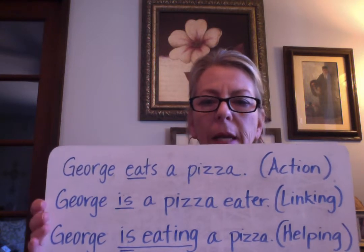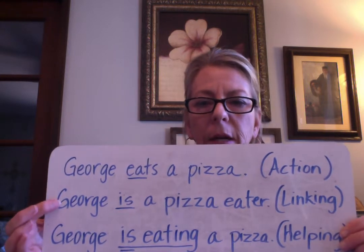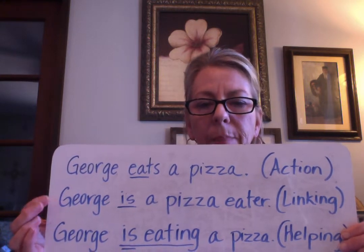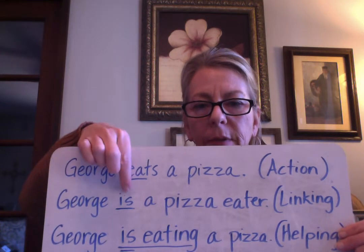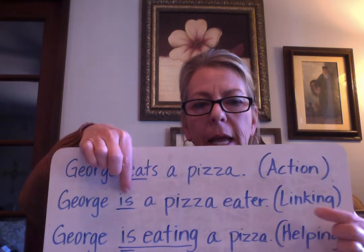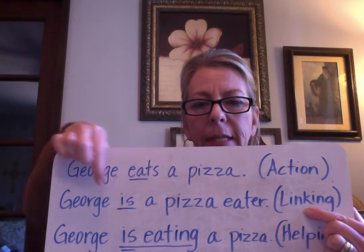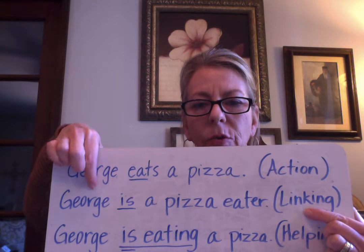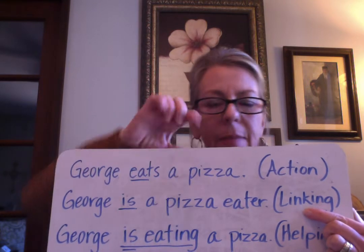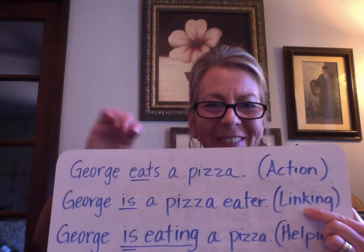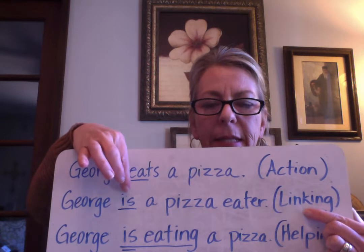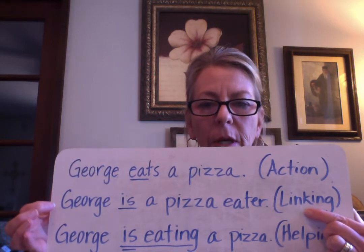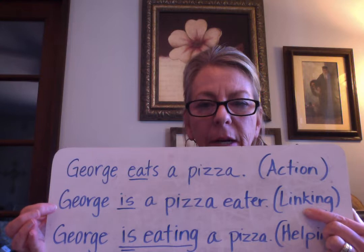Now look at this: George is a pizza eater. This verb 'is' is a linking verb because it's connecting George and renaming him as a pizza eater. They're linked together by this linking verb 'is.' George equals pizza eater.